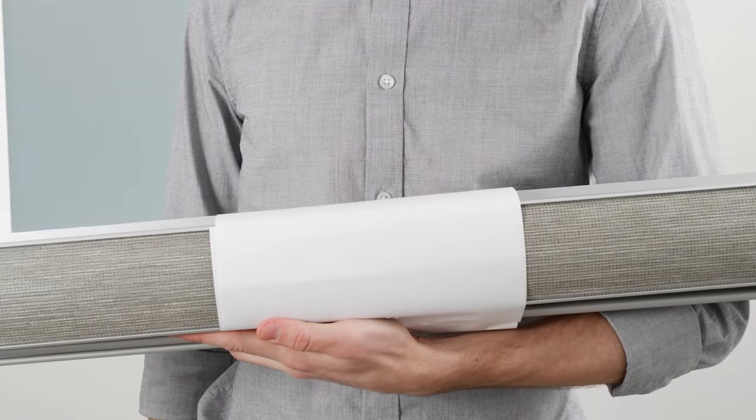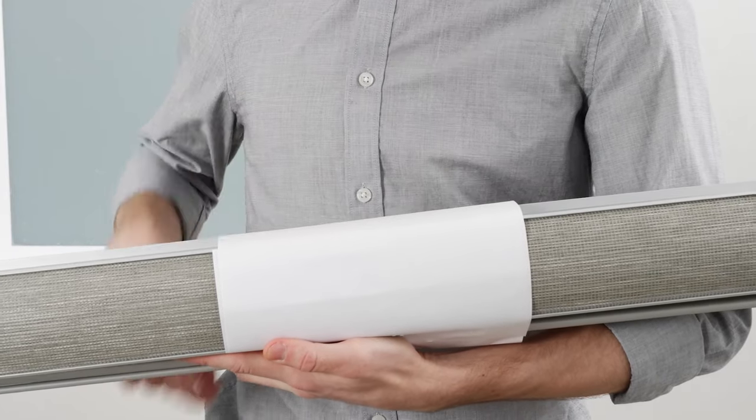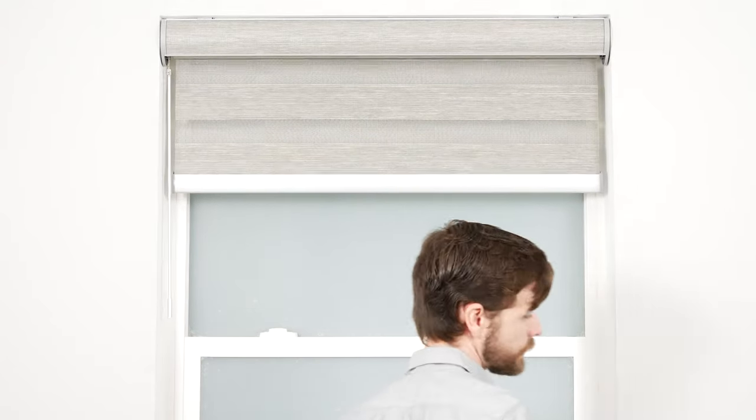If your Zebra Shades came with a band around the middle, do not remove it until your shade is fully installed. It is important that you do not operate your Zebra Shade until it is fully installed to prevent damage from occurring.